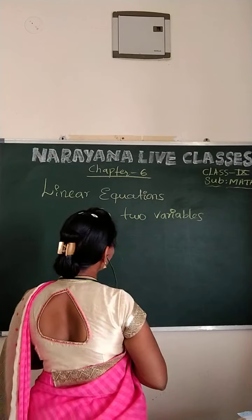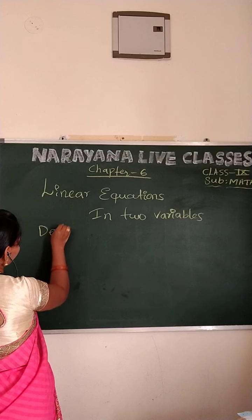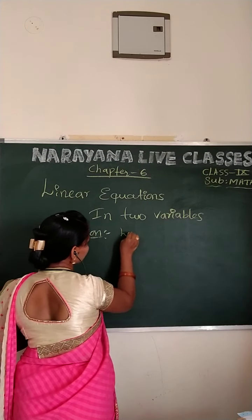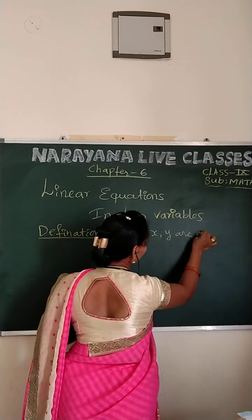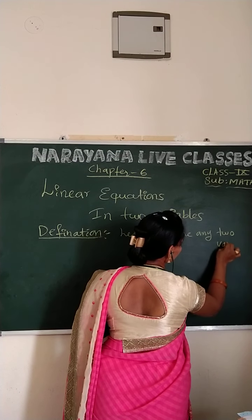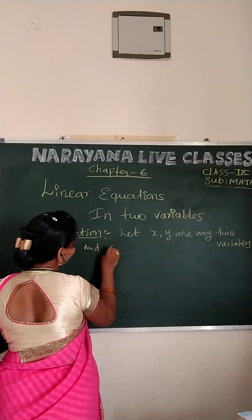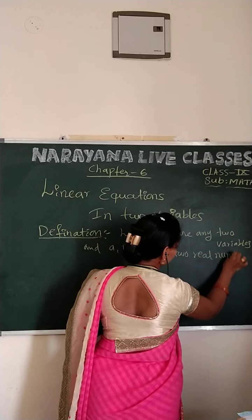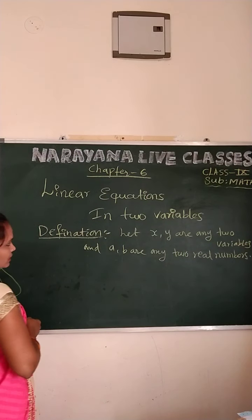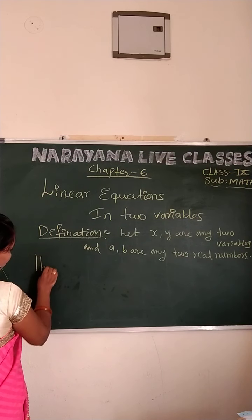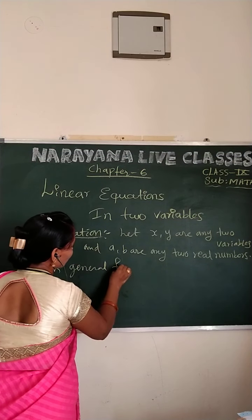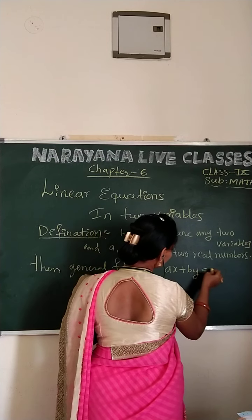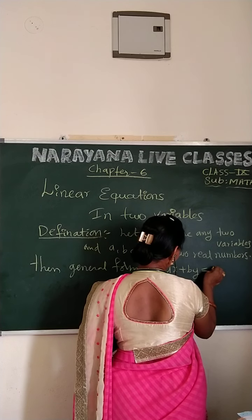What is the general form of linear equations in two variables? First, the definition: let X and Y be any two variables, and let A and B be any two real numbers. The general form of linear equations in two variables can be expressed as AX plus BY is equal to C, where C is any constant or zero.